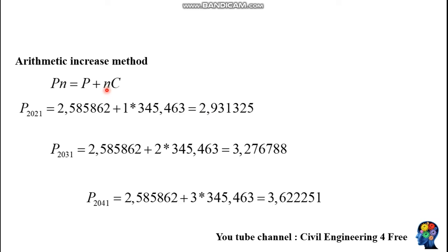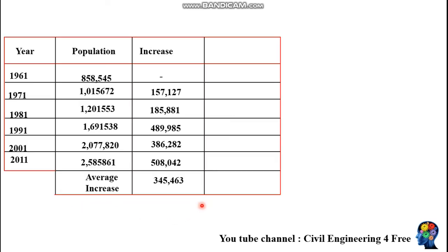For 2031, n will be 2, and for 2041 the number of decades is 3, so n equals 3. Plug these into the arithmetic increase formula to obtain the future population predictions for each target year.